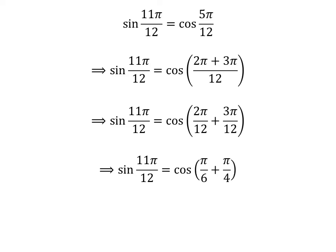Following the previous steps, we get sine of 11 times pi upon 12 is equal to cosine of pi upon 6 plus pi upon 4.